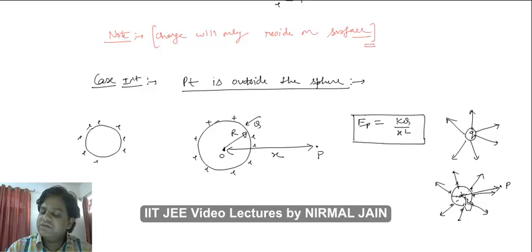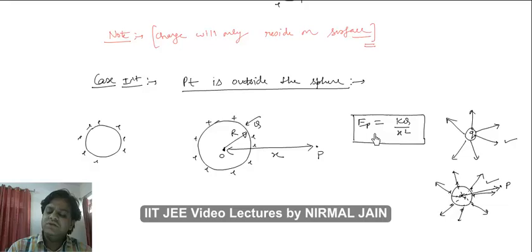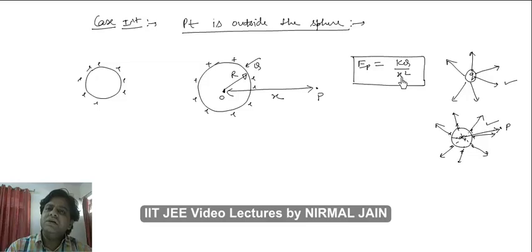The electric field lines configuration of a point charge and a sphere are almost the same. So for any point p which is outside the sphere, you can consider the electric field to be simply kq by x squared, derived by concentrating the whole charge q at the center of the sphere.